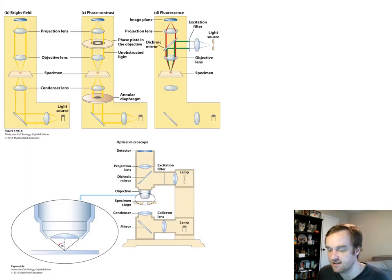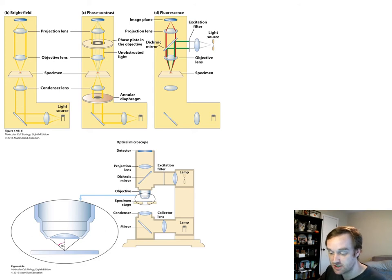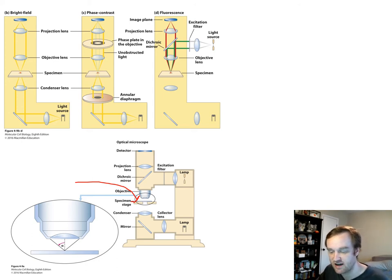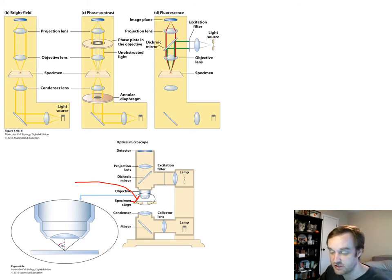In a typical compound light microscope, the specimen is mounted on a transparent glass slide positioned on a movable specimen stage, with several lenses to magnify the specimen. Total magnification is usually up to 1000x — the product of individual lens magnifications. The objective lens closest to the specimen and the projection lens that focus the image on the camera make up that 1000-fold magnification.